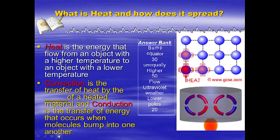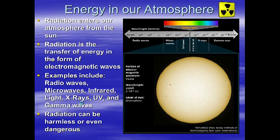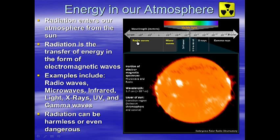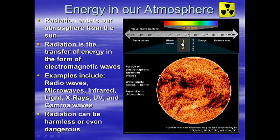Energy in our atmosphere — how does our atmosphere become warm? It becomes warm from radiation from the Sun. Radiation is the transfer of energy in the form of electromagnetic waves. Examples include radio waves and microwaves — our Sun gives off both. Perhaps the most influential form of radiation is infrared. These heat waves come from the Sun and greatly affect and warm our atmosphere.